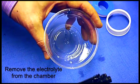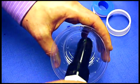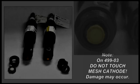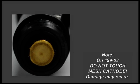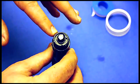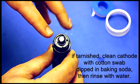Then you want to dump out the excess amount of electrolyte solution that's still in the sensor. Then you need to inspect the cathode. If it's tarnished you just need to clean it with a cotton tip swab dipped in baking soda and clean it off.